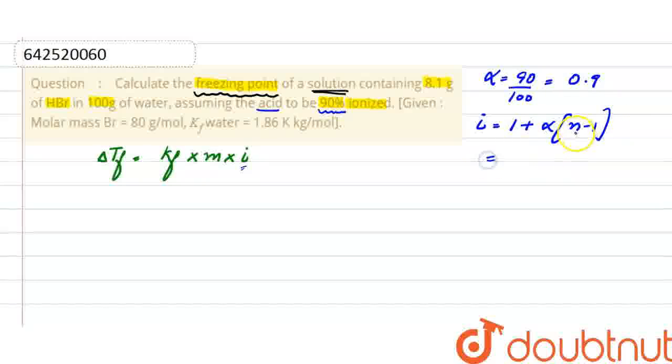Where n is the number of ions produced when the molecule dissolves in solution. HBr gives 2 ions, so n = 2. Therefore, i = 1 + 0.9(2 - 1) = 1.9. The Van't Hoff factor is 1.9.